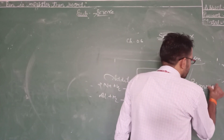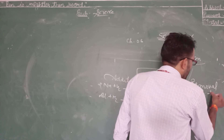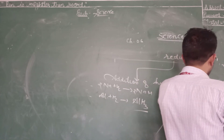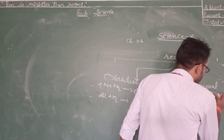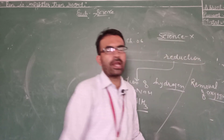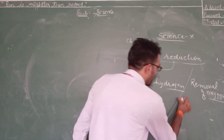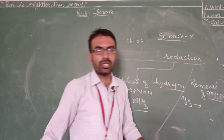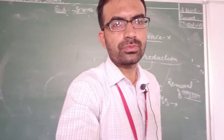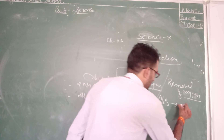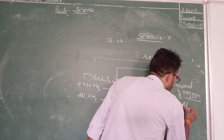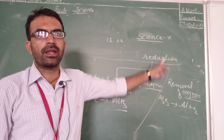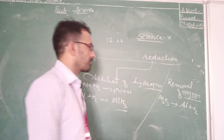For reduction by removal of oxygen: Al2O3 gives Al plus O2. This is an example of the removal of oxygen and therefore a reduction reaction. Another example of addition of hydrogen: Na plus H2 gives NaH — sodium hydride — which is also a reduction reaction. Al plus H2 gives AlH3, another example of reduction.